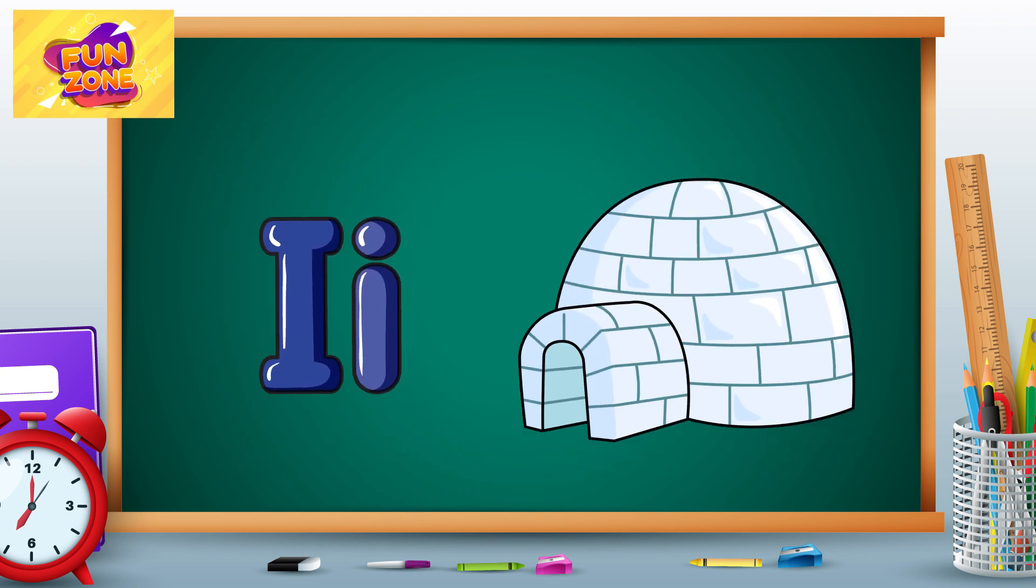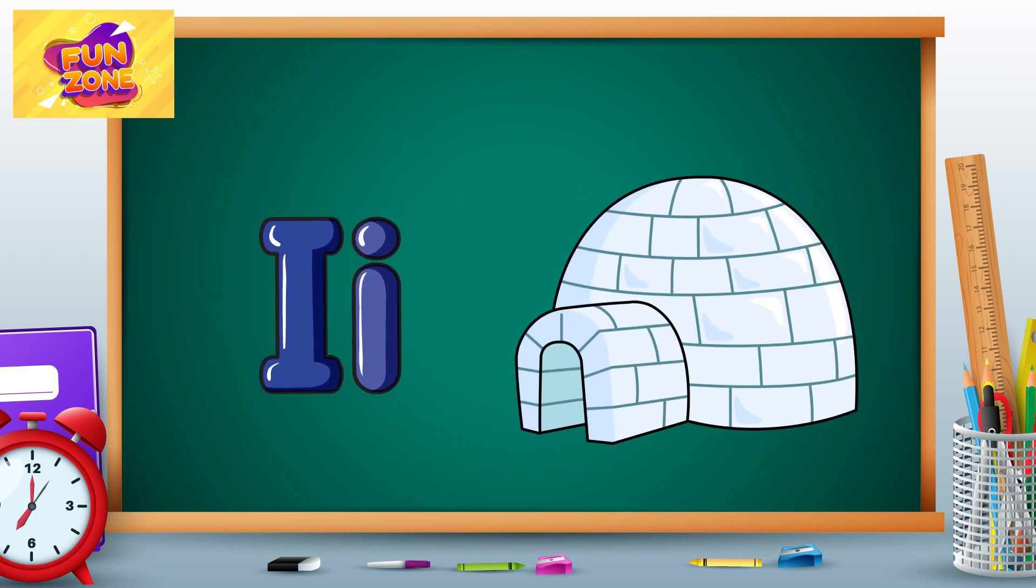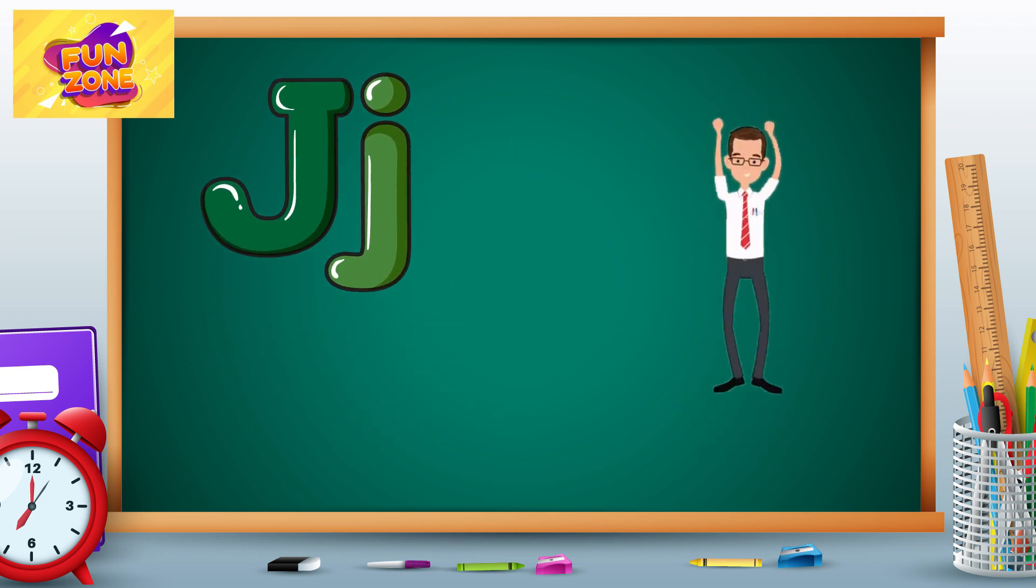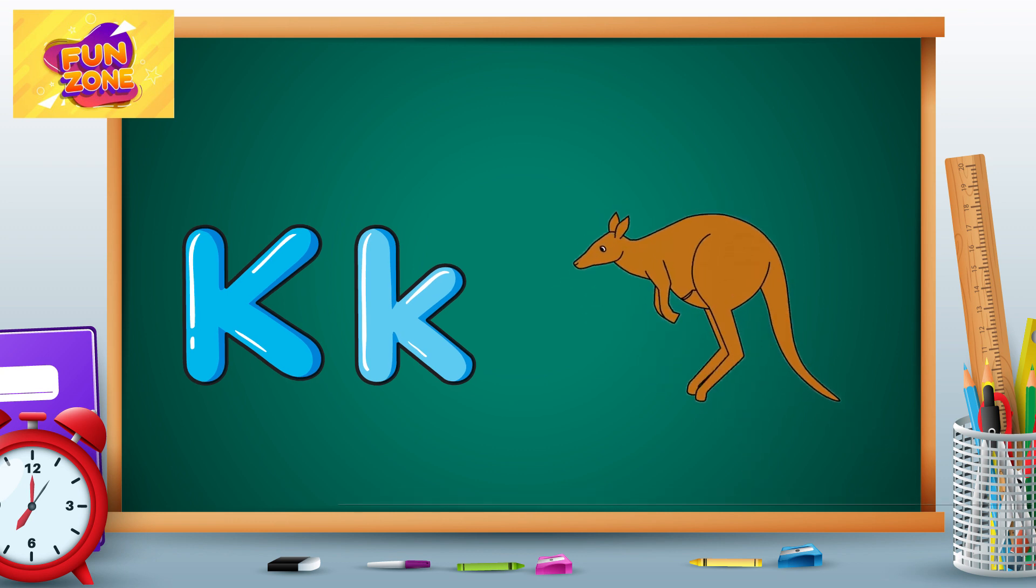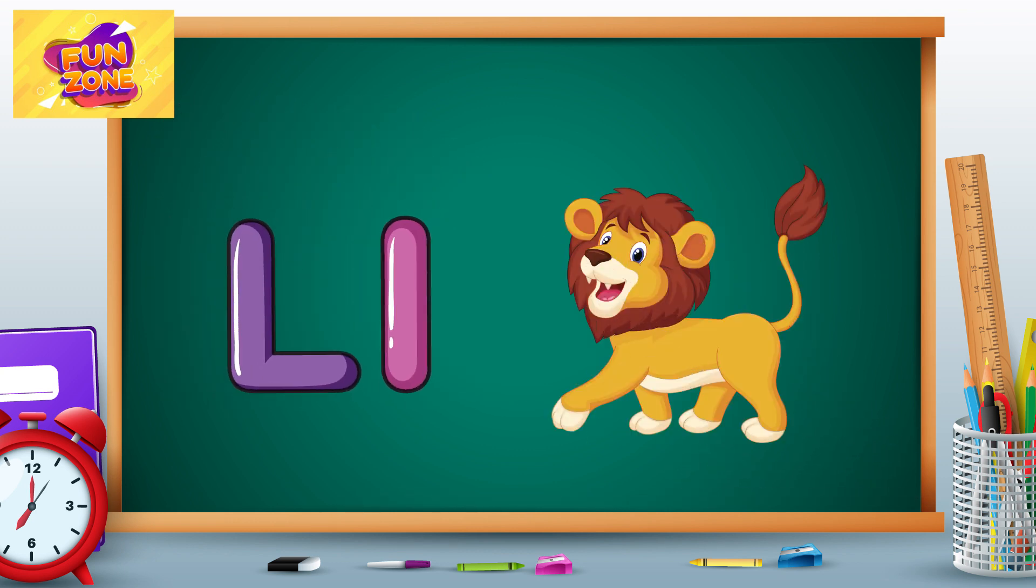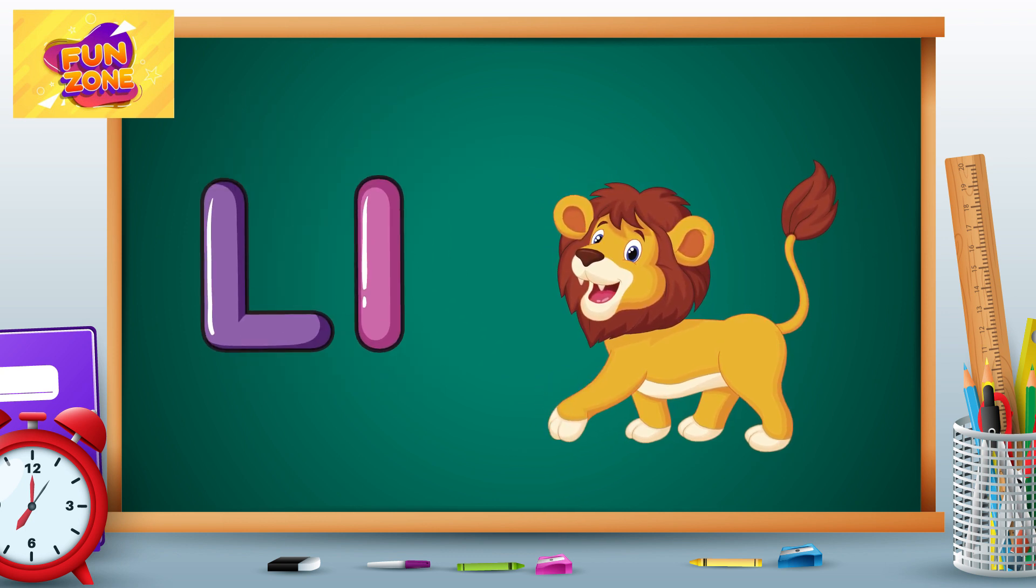I is for igloo, i-i-igloo. J is for jump, j-j-jump. K is for kangaroo, k-k-kangaroo. L is for lion, l-l-lion.